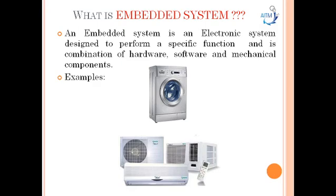From these examples we can understand three key points. First, an embedded system is designed to do a specific function only — for example, a washing machine can only wash clothes. Second, the hardware and mechanical components consist of all physically visible things used for input and output. Third, an embedded system will always have a chip, either a microprocessor or microcontroller, that has the code or software which drives the system.